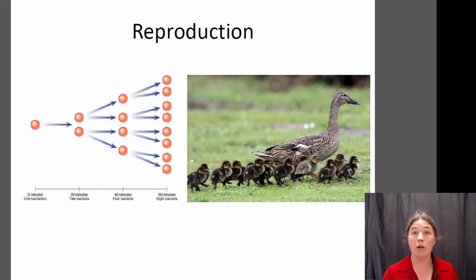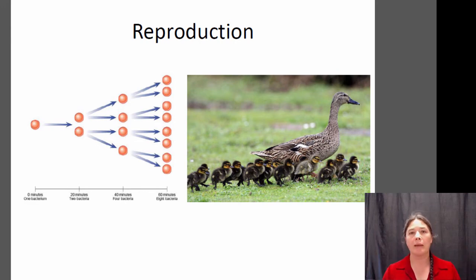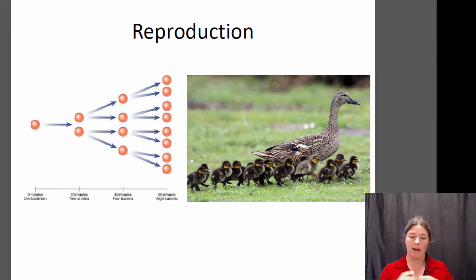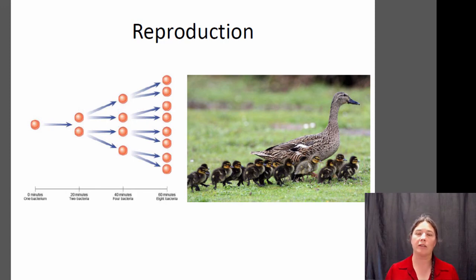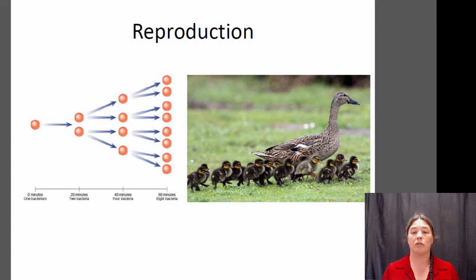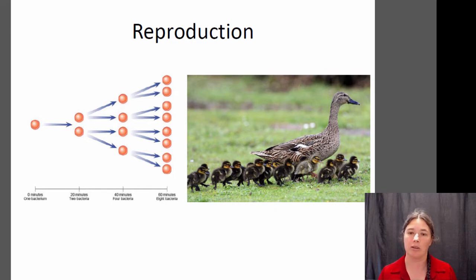All organisms reproduce — they make more of themselves, they don't just spontaneously arise. A bacterium will simply divide itself in two. You have one bacterial cell, it divides into two, those divide into four, giving you really rapid reproduction. More complex organisms tend to reproduce sexually, like this mallard duck, which has produced a whole bunch of ducklings. In any case, they produce more of a similar species — genetically similar to themselves.